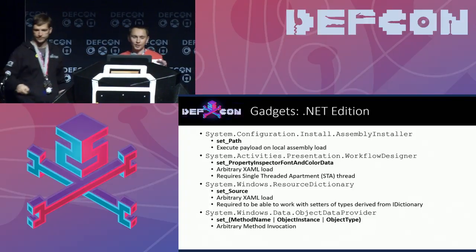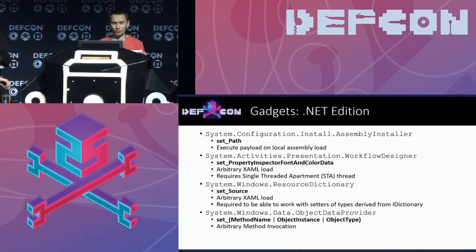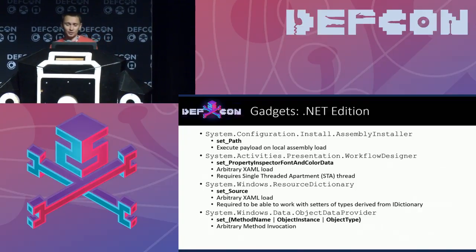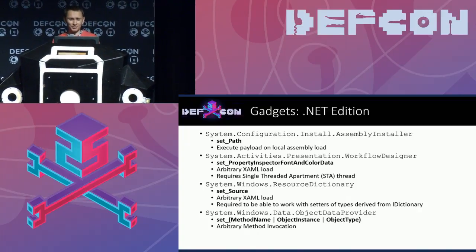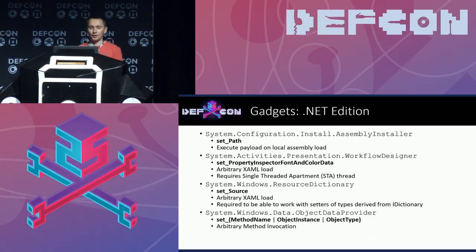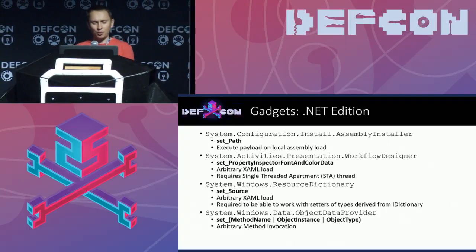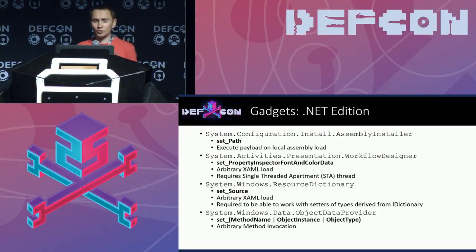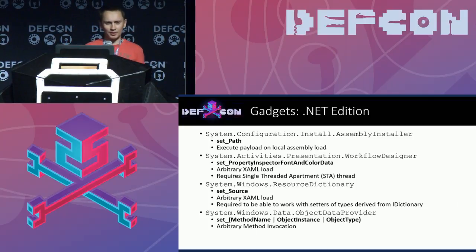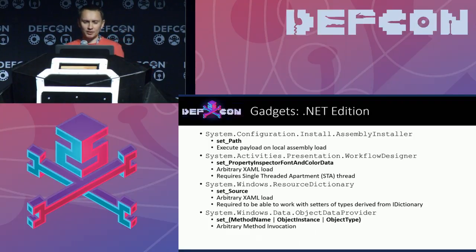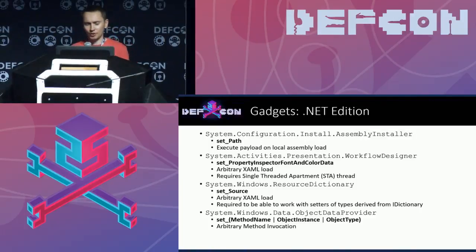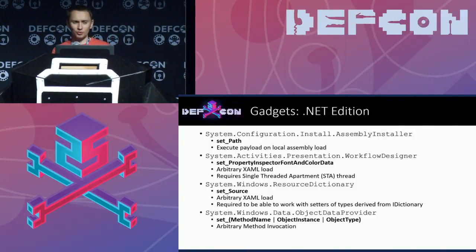Let's look at a few setter gadgets in .NET — all of them can lead to arbitrary code execution. The first gadget is the setter of the path property in the AssemblyInstaller class. It allows code execution during library loading from a path controlled by the attacker. There are no additional requirements if the assembly payload is on the local machine, but in case of remote resources, the .NET framework may have some additional security checks.